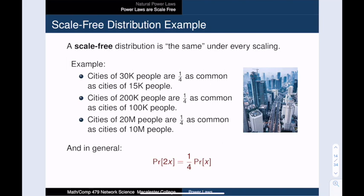In general, for any positive integer x, the frequency of a city population of size 2x must be one-quarter as likely as a city with population x. This definition has the self-similar ethos of a fractal. No matter how far we zoom in or out, we see the same basic curve shape in our viewing window.